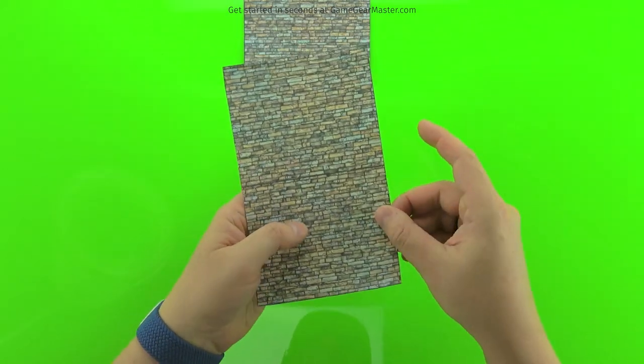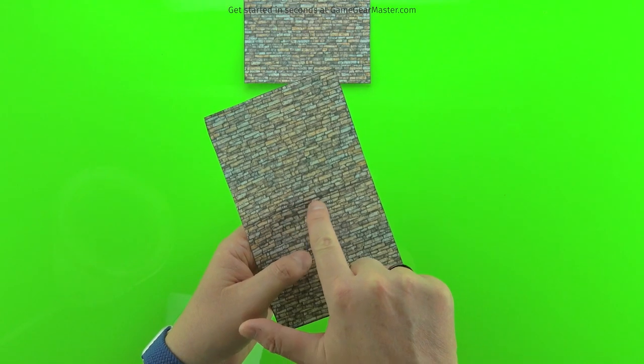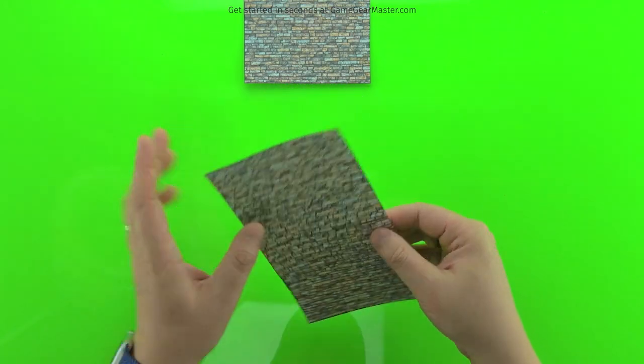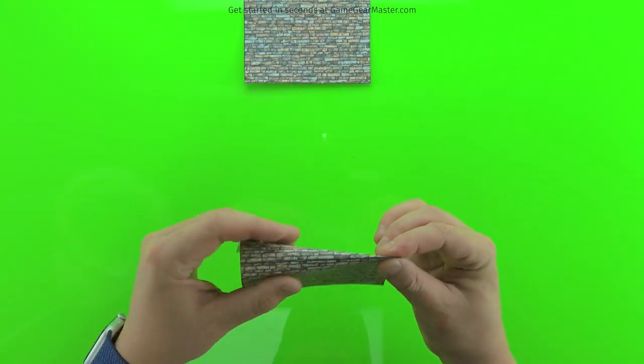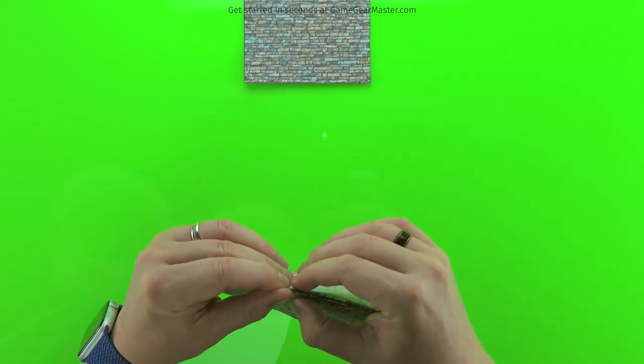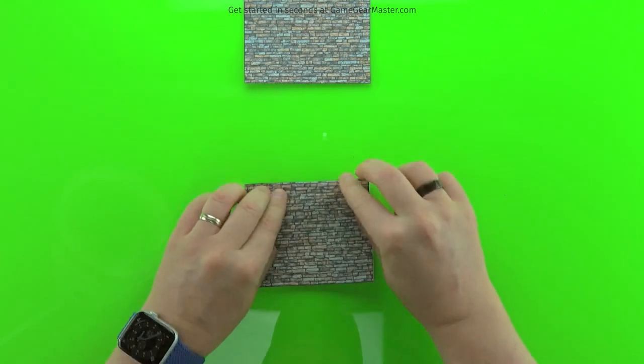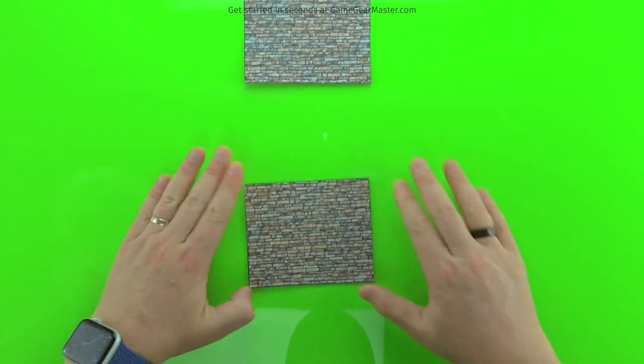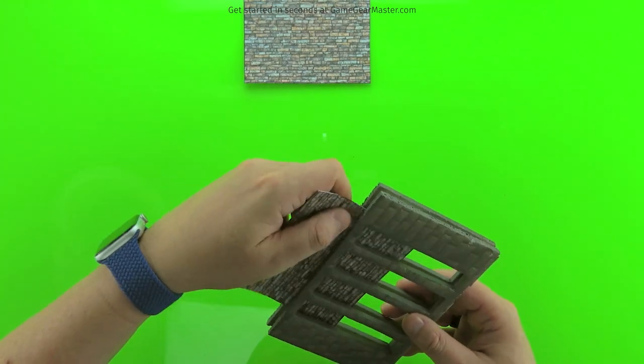And you'll notice there's like a black line there. That's where you're going to fold it so the texture will show up on both sides of your Terraino wall. And then you just insert it into the wall.